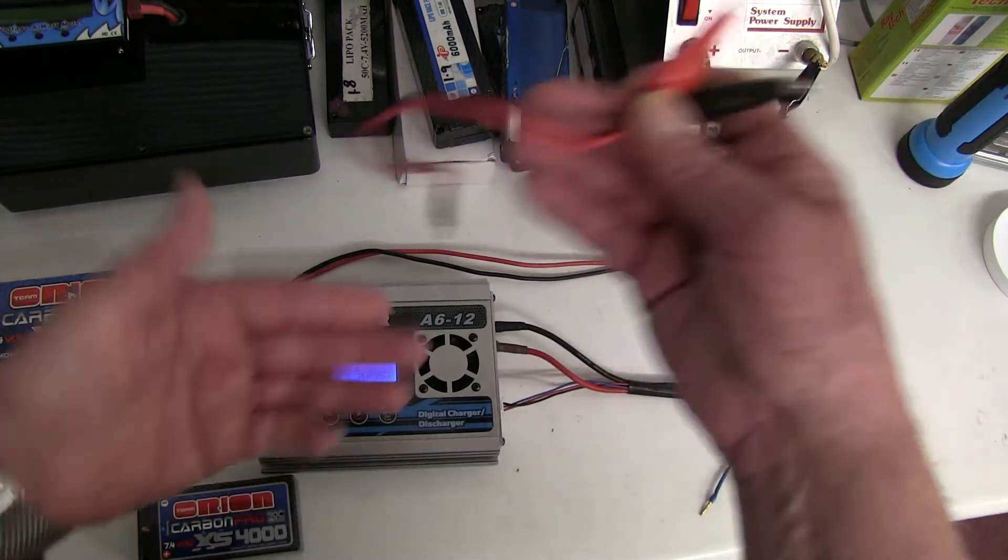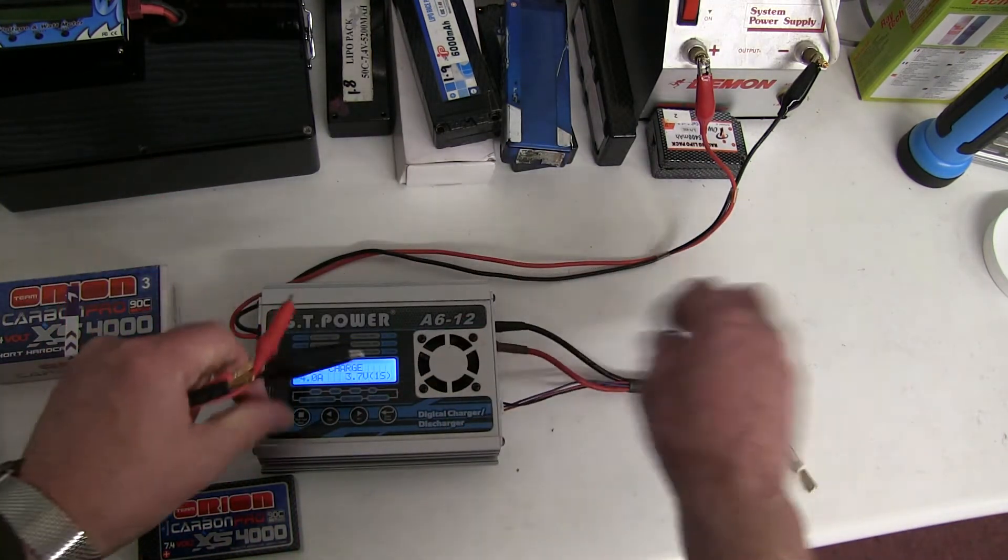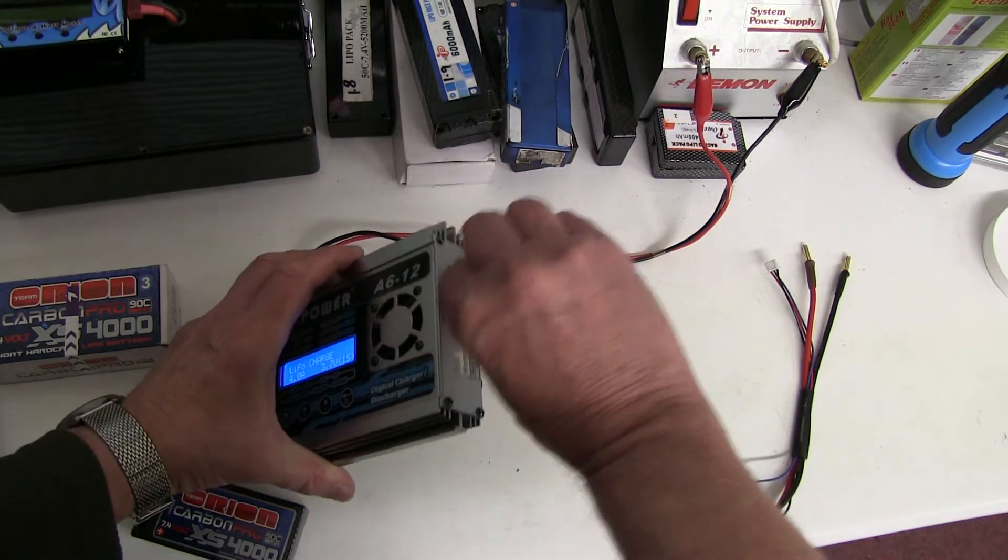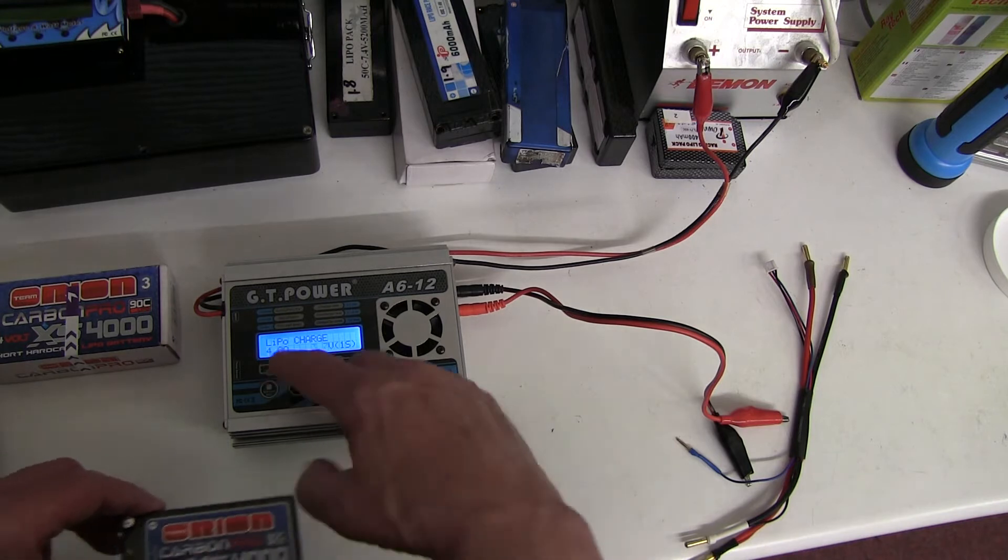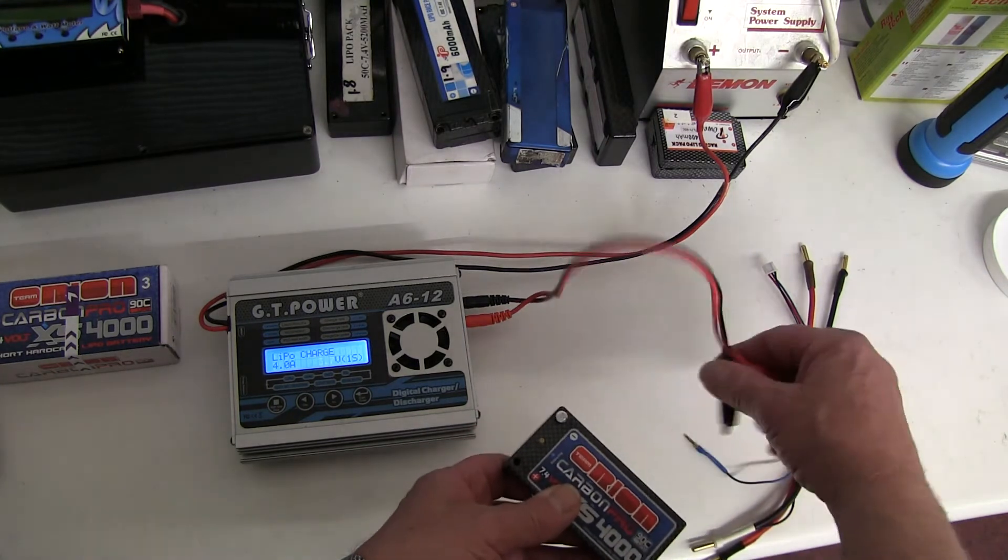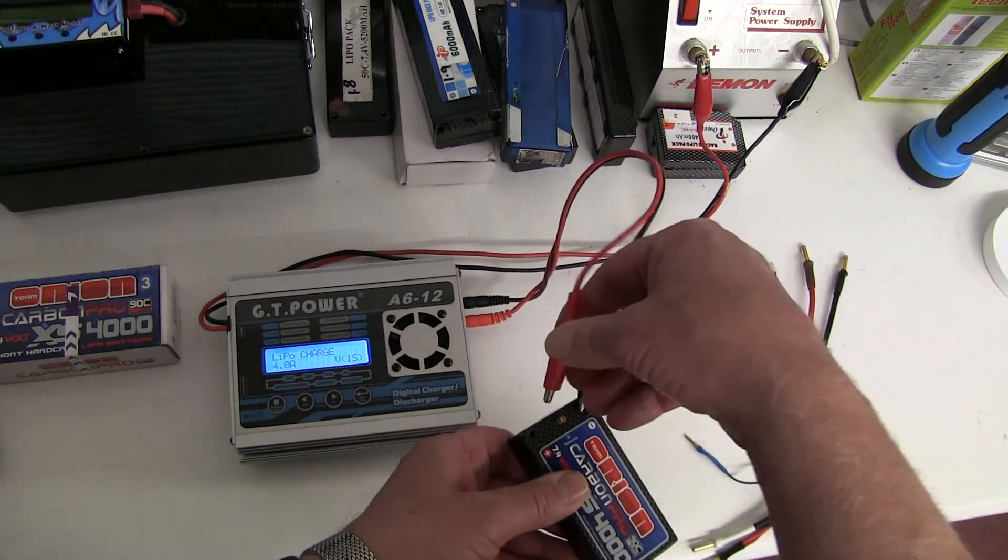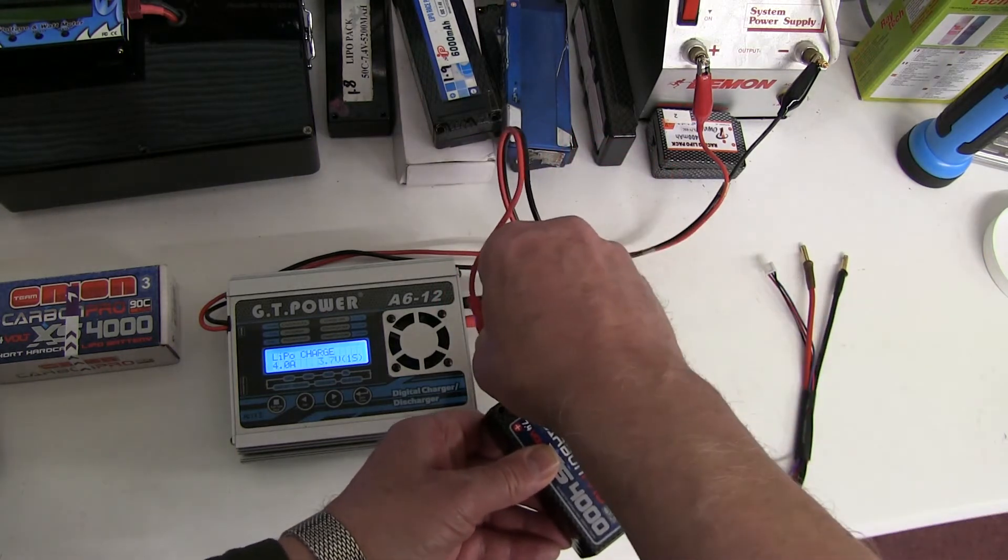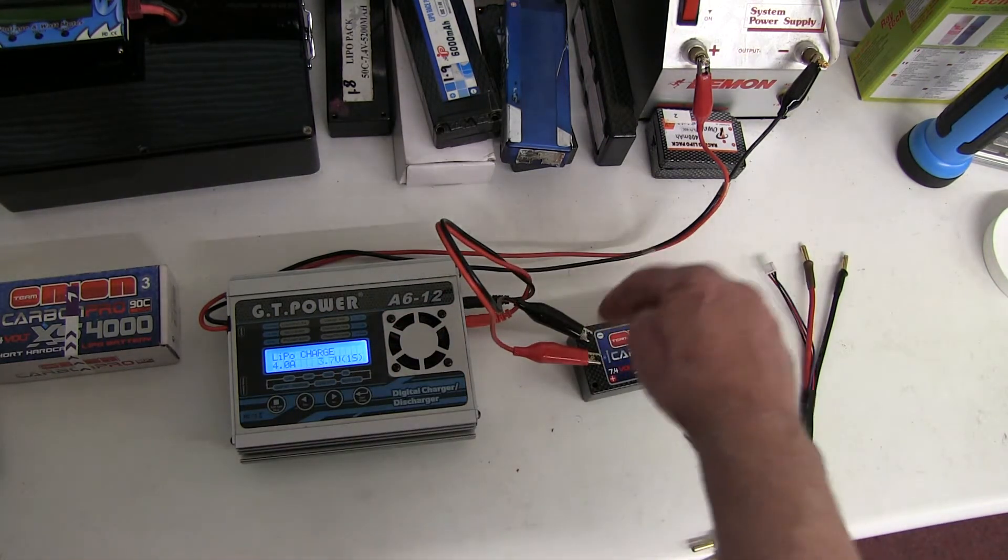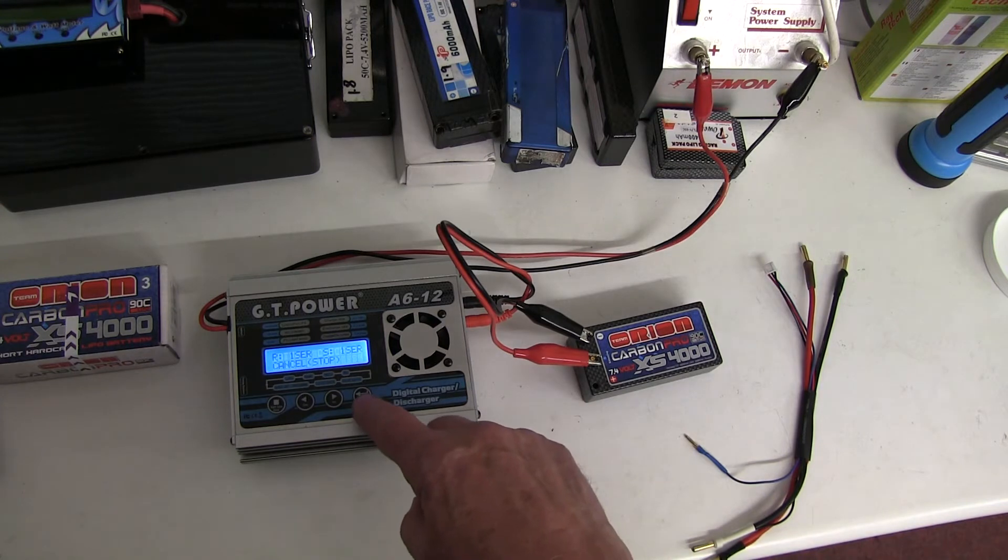So the first thing you do, you get your charger and you get a charge lead like this which is just a plus and minus. You won't need the balanced charge lead which is normally on it—you take that off. Just plug in the plus and minus. Set it to 1S, and then for a high power battery about 4 amps. You don't want to charge it at say 10 amps or something because often with 1S charging, some chargers, especially cheaper ones, have difficulty with 1S and they don't like high current, so they find it, switch off early.